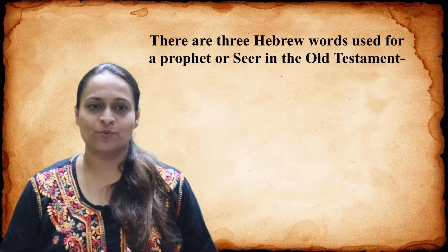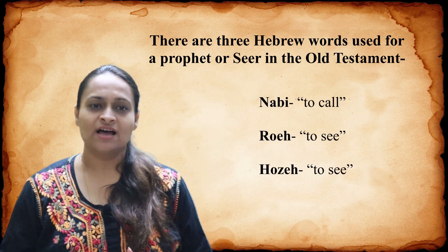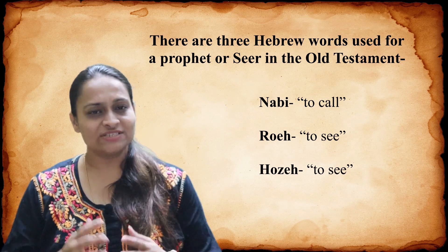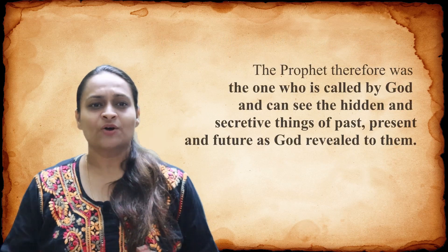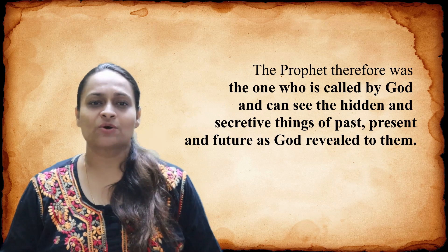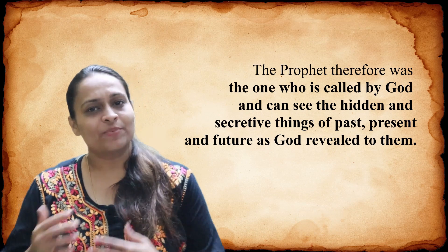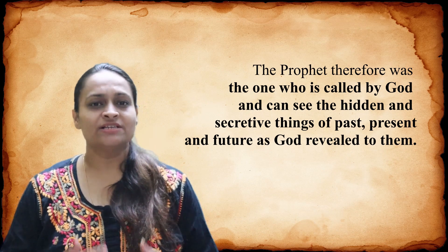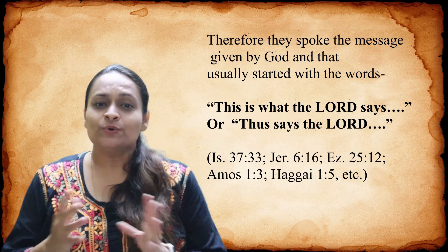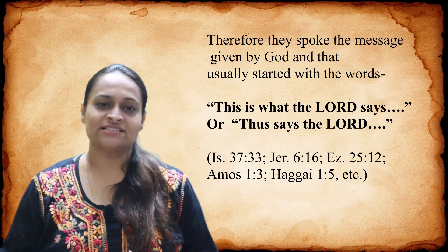There are three Hebrew words used for a prophet or a seer in the Old Testament: Nabi, which means to call; Ro'eh, which means to see; and Hozeh, which also means to see. According to these three words, the prophet was the one who is called by God and can see the hidden and secretive things of the past, present, and future as God revealed to them. Therefore, they spoke the message given by God, which usually started with the words 'Thus says the Lord' or 'Thus says the Lord.'